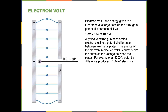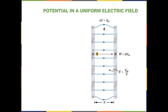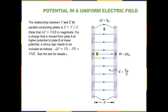An electron volt is the energy required to move a fundamental charge through a potential difference of one volt. Since the charge of an electron is 1.6 times 10 to the minus 19 coulombs, you multiply that by 1 volt and you get 1.6 times 10 to the minus 19 joules. A typical electron gun accelerates electrons using a potential difference between two metal plates, and the energy of the electron in electron volts is numerically the same as the voltage between the plates.